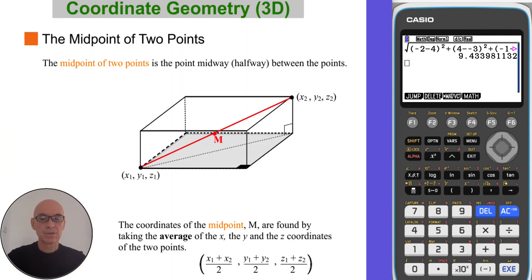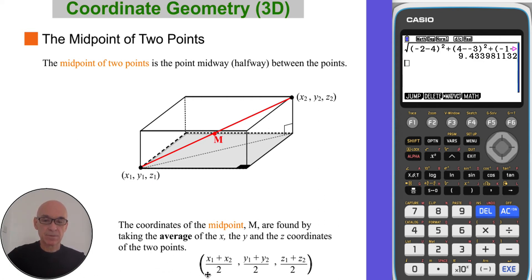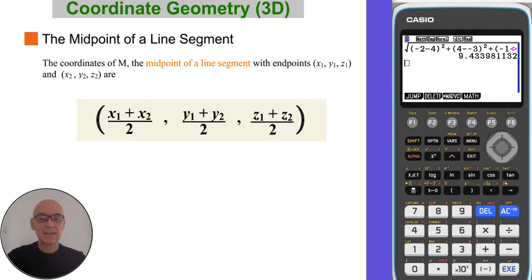The midpoint of two points is the point midway or halfway between the points — in other words, it's the point that's halfway along the line segment that joins those two points. The coordinates of the midpoint M are found by taking the average of the x coordinates, the average of the y coordinates, and the average of the z coordinates. This formula can be found on page 6 in your formula booklet.